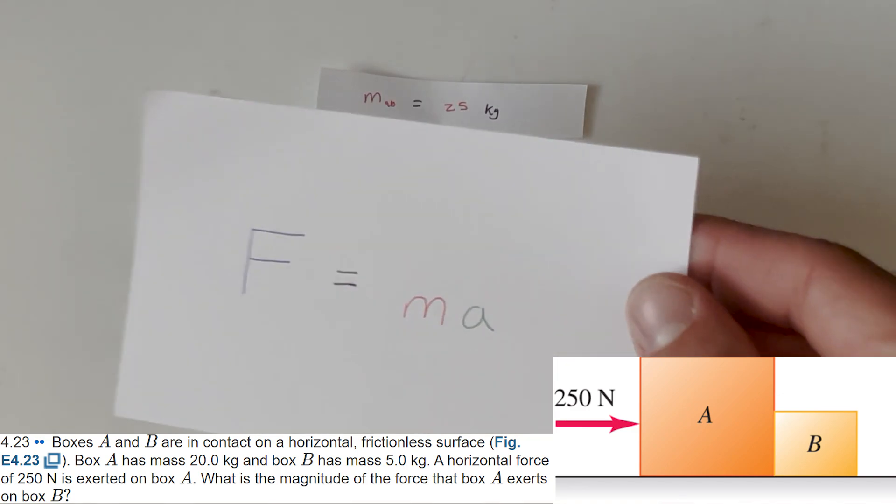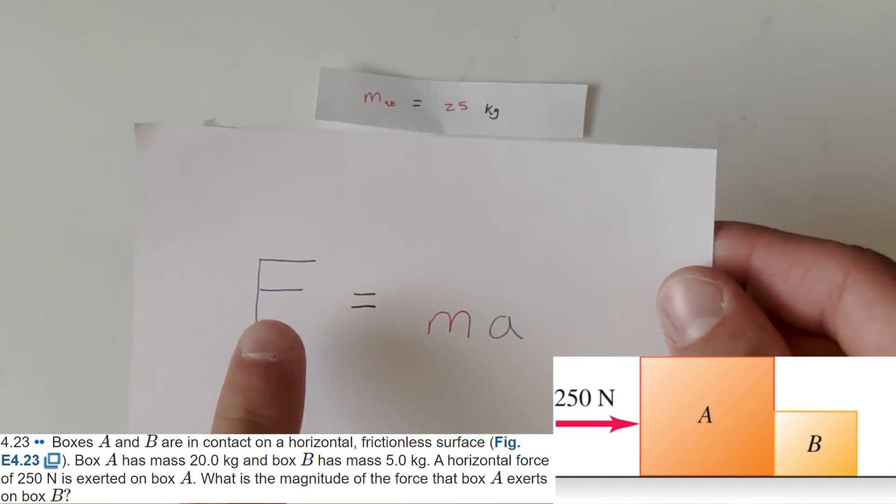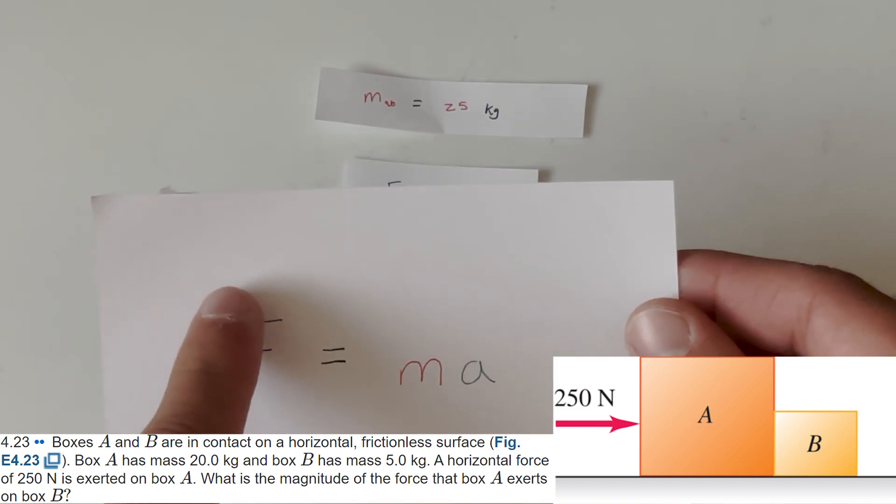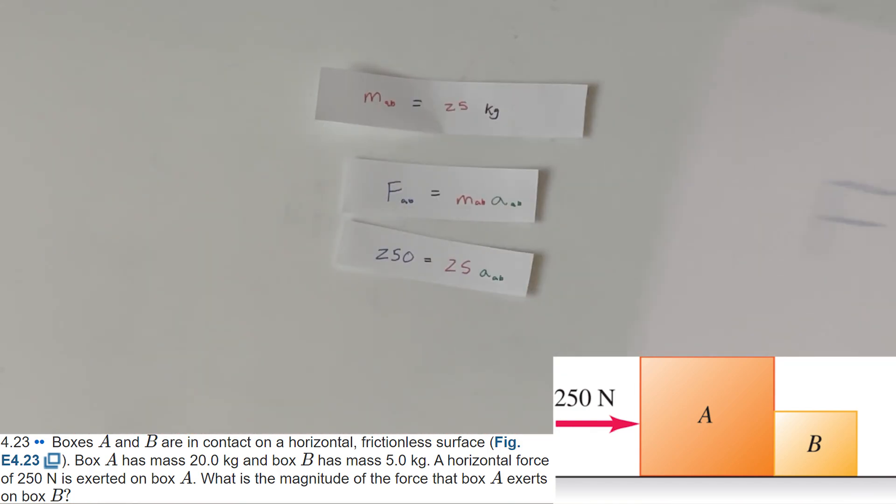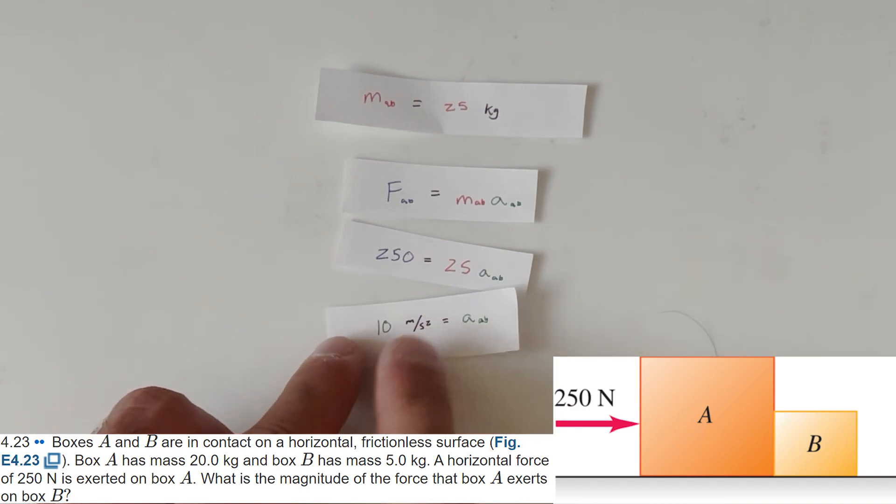And if you remember, going back to this grand equation, we know we're looking for this force. We're looking for the force on B. So we need to find that acceleration. So this is what we're solving for, acceleration AB. So, of course, we're going to divide by 25 from both sides of the equation. And 250 divided by 25 is 10. So that means that acceleration AB is 10 meters a second squared.